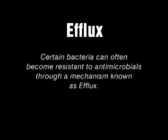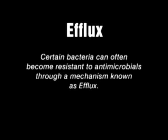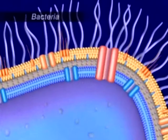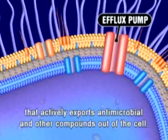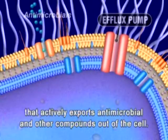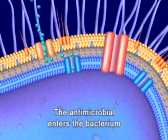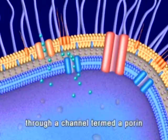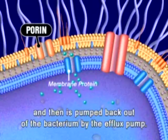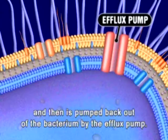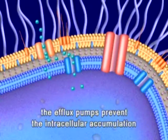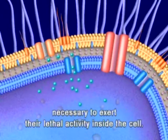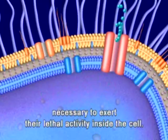Efflux. Certain bacteria can often become resistant to antimicrobials through a mechanism known as efflux. An efflux pump is essentially a channel that actively exports antimicrobial and other compounds out of the cell. The antimicrobial enters the bacterium through a channel termed a porin and then is pumped back out by the efflux pump, preventing the intracellular accumulation necessary to exert lethal activity inside the cell.